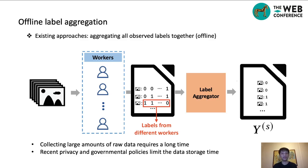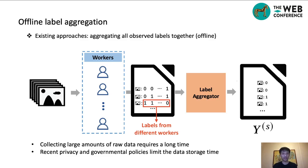There are many existing label aggregation approaches, but they are designed for offline scenarios. They use all the observed labels together, aggregate them, and give the corresponding aggregated labels. As shown in the figure, the workers label all the instances and provide the corresponding noisy labels, then the aggregator outputs the result. But this offline application scenario can be unreasonable for today's requirements.